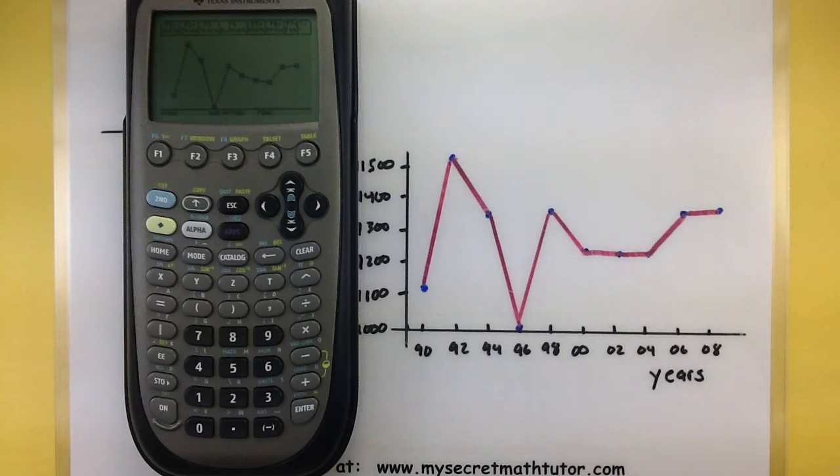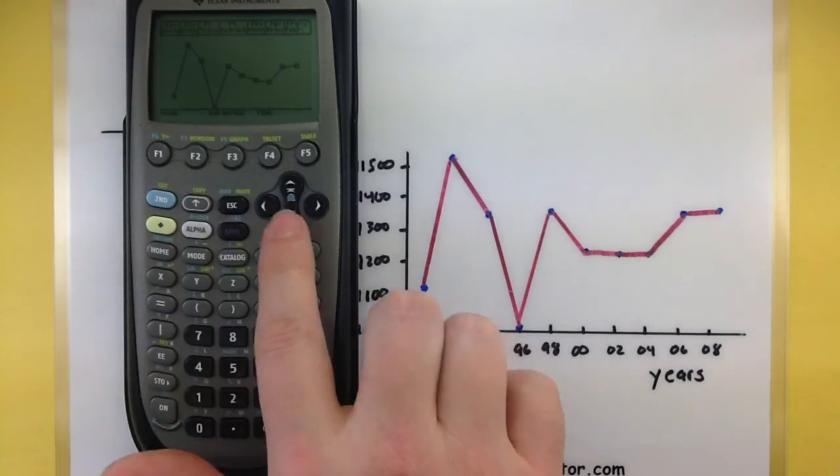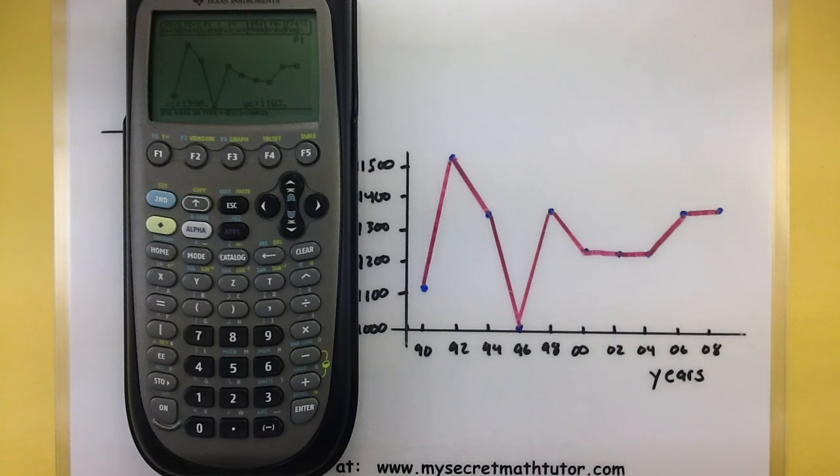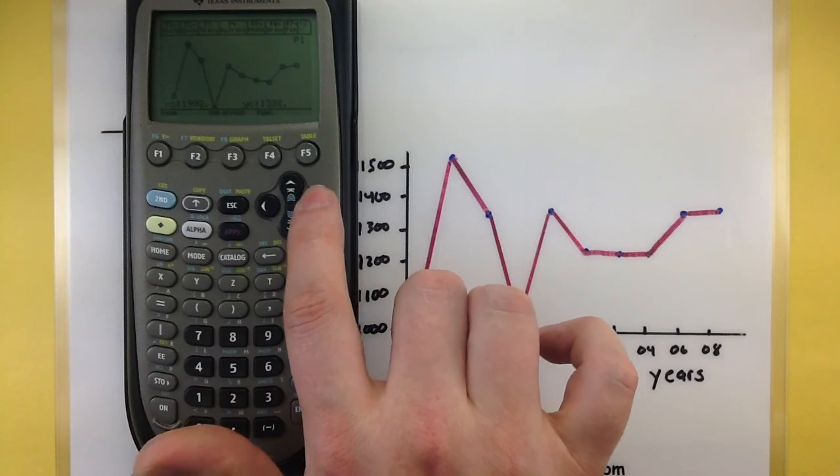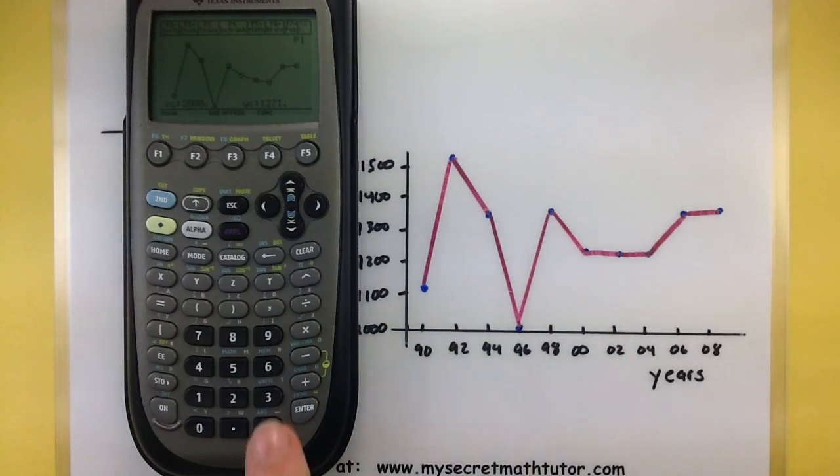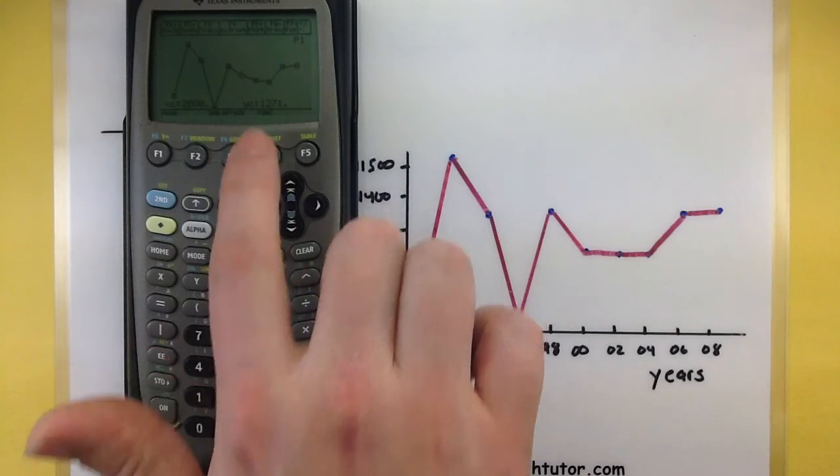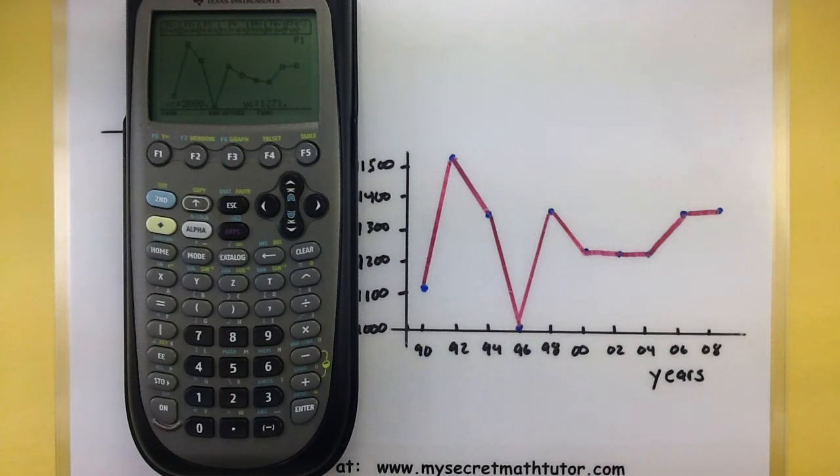If you want to see some individual data points as you're going through this, you can use your trace feature to walk through them one at a time. That's F3, and if you press that you'll see it highlights the very first data point. So this first one is 1990, and it has the number of students, 1,103. As you use the left and right arrow keys, it will walk through these individual data points. So now which one's highlighted, it looks like I'm on the year 2000, which has 1,271 students. And there you go, so now I can see all of my data as I walk through them.